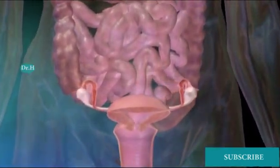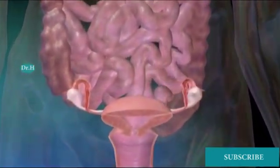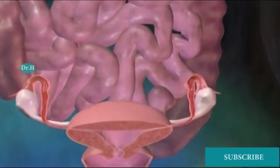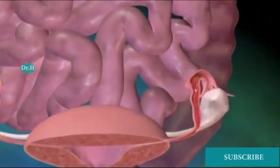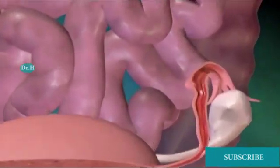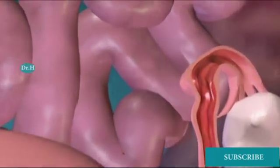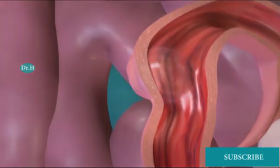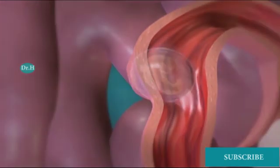In some cases, however, complications may cause the egg to implant in areas other than the uterine lining. Such an occurrence is known as extrauterine or ectopic pregnancy.